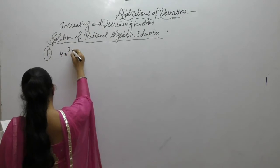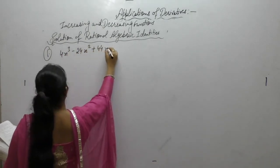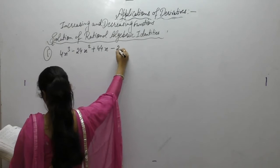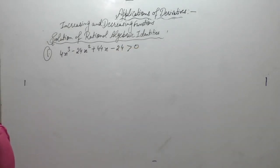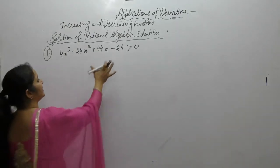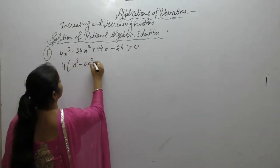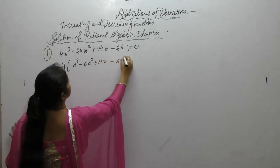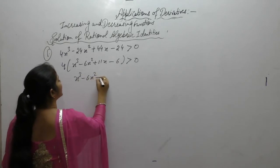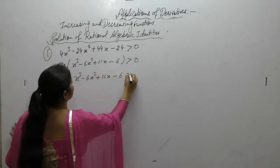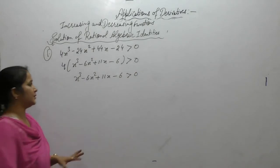Solve 4x cubed minus 24x squared plus 44x minus 24 greater than 0. Here 4 is common, giving us 4 into x cubed minus 6x squared plus 11x minus 6 greater than 0.